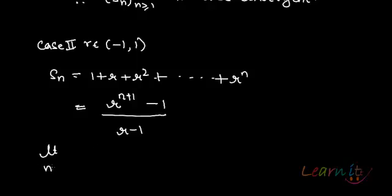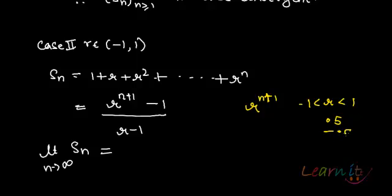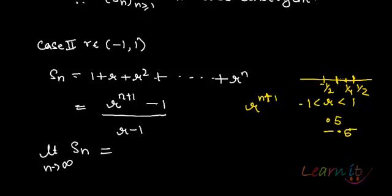Now let's look at the limit as n tends to infinity of r to the n plus 1. Remember, r is something between minus 1 and 1 — it could be 0.5, minus 0.5, one-third, two-thirds — any fraction. When a fraction between 0 and 1 is raised to the power n plus 1, where n is going to infinity, what happens? Say you have one-half: one-half squared is one-fourth, which is lesser, and keeps getting smaller. Similarly for negative fractions — the terms converge to 0.